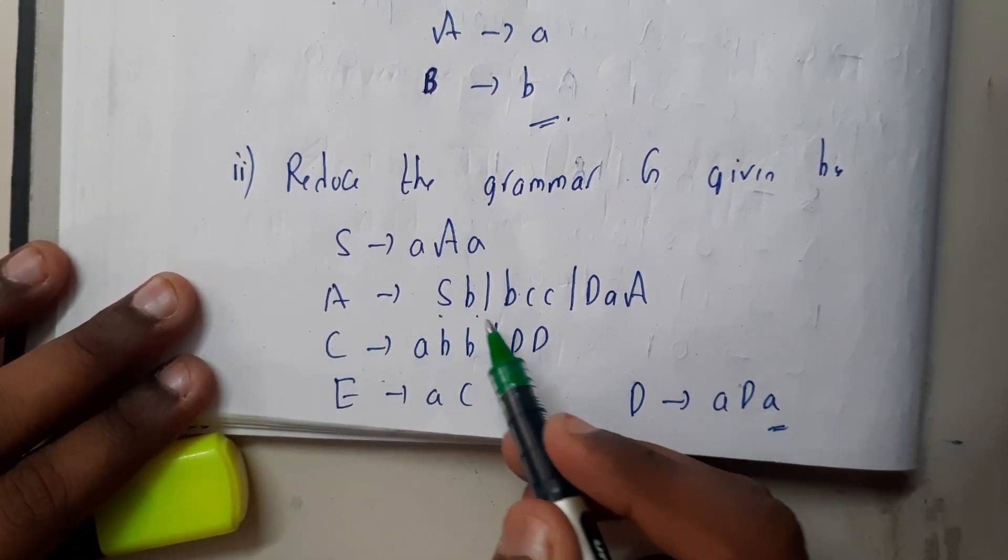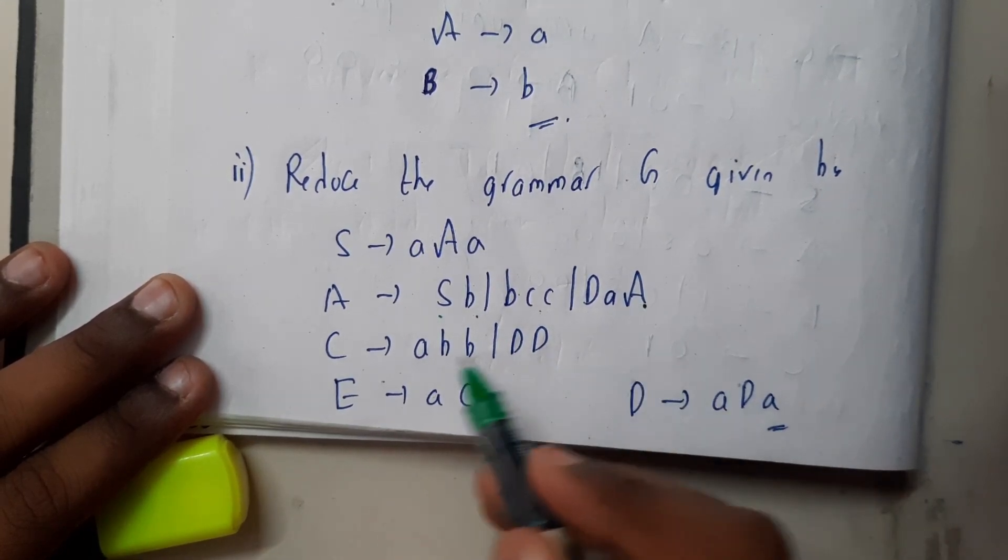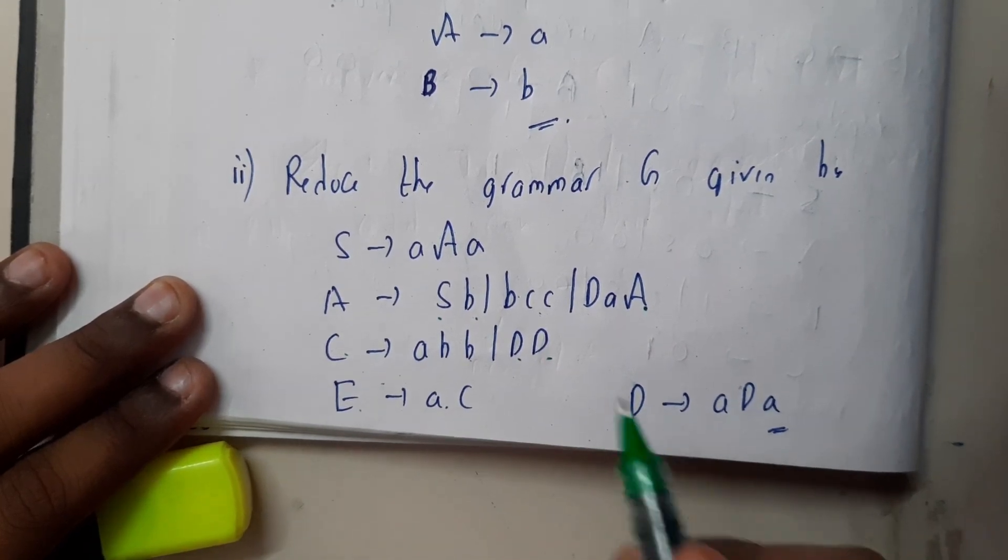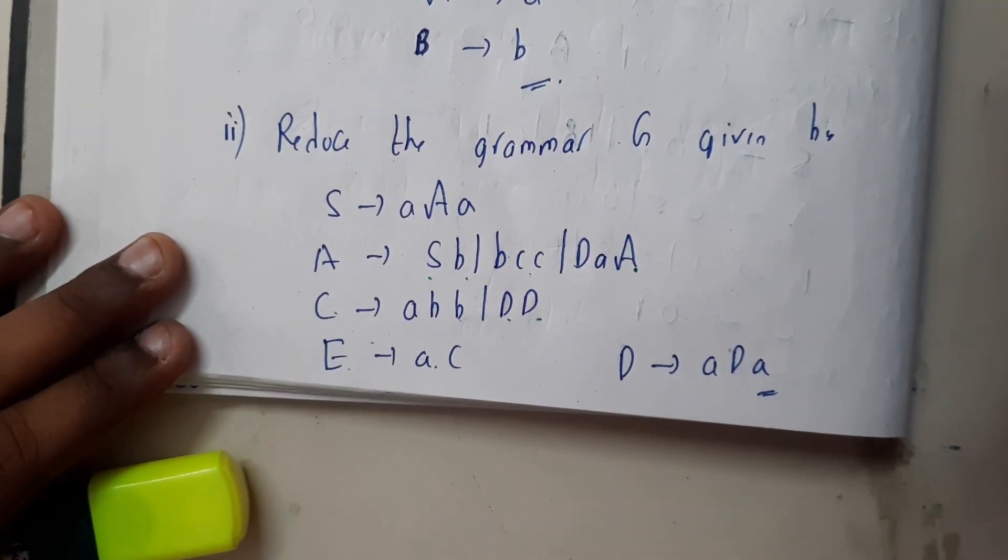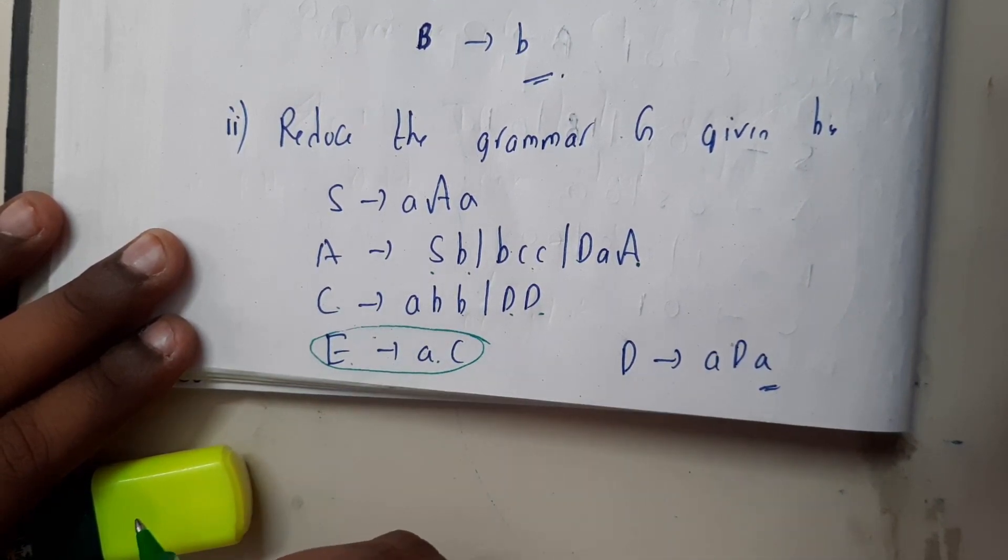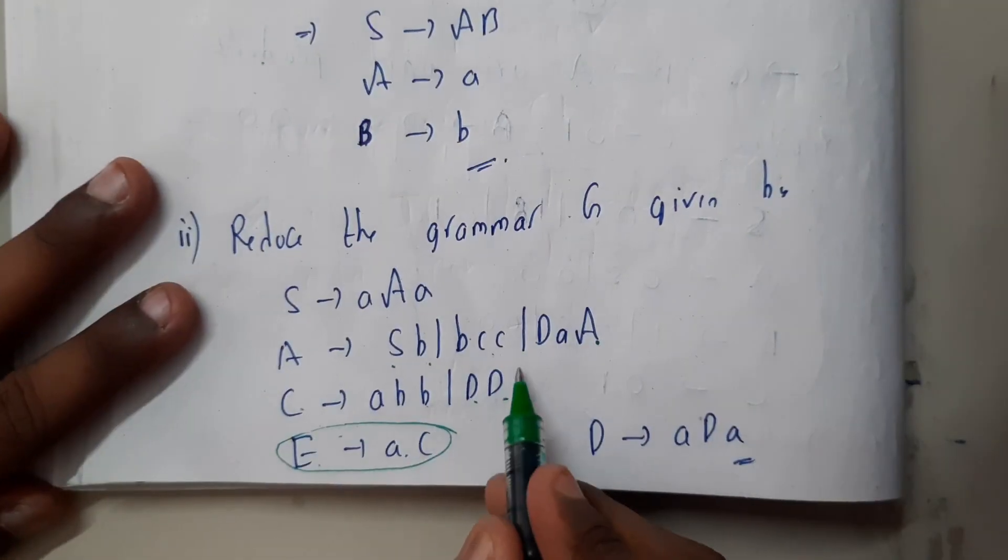S tends to a capital A, A tends to Sb or bcc or DaA, C tends to abb or DD, E tends to aC, D tends to aDa. If you observe it carefully, I am noticing that this E is a useless symbol.